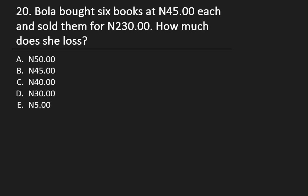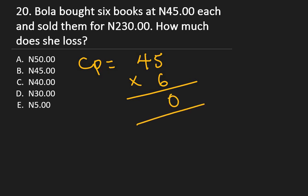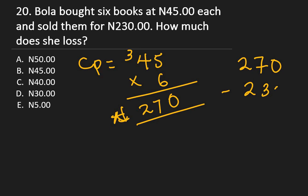Question 20: Bola bought 6 books at 45 Naira each and sold them for 230 Naira. How much does she lose? Total cost = 6 × 45 = 270 Naira. Since she sold them for 230 Naira, which is less, there is a loss. Loss = 270 − 230 = 40 Naira. The right answer is C.